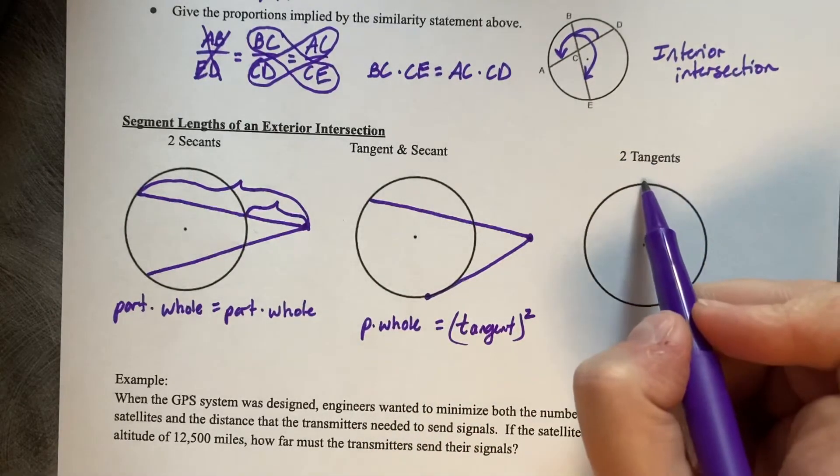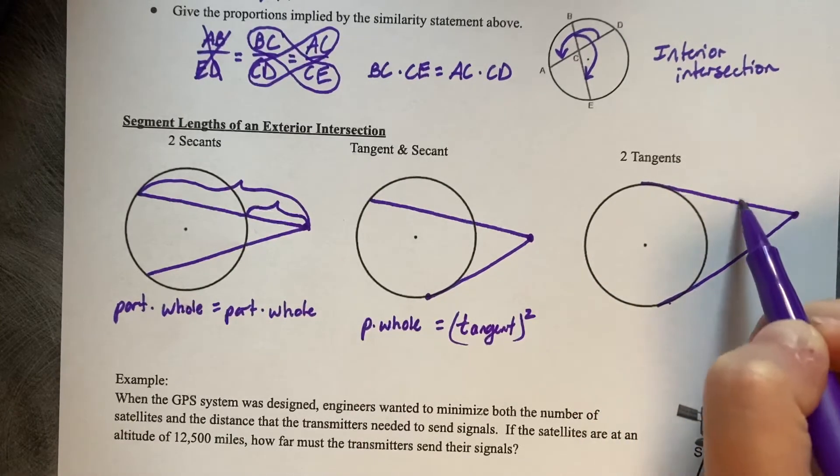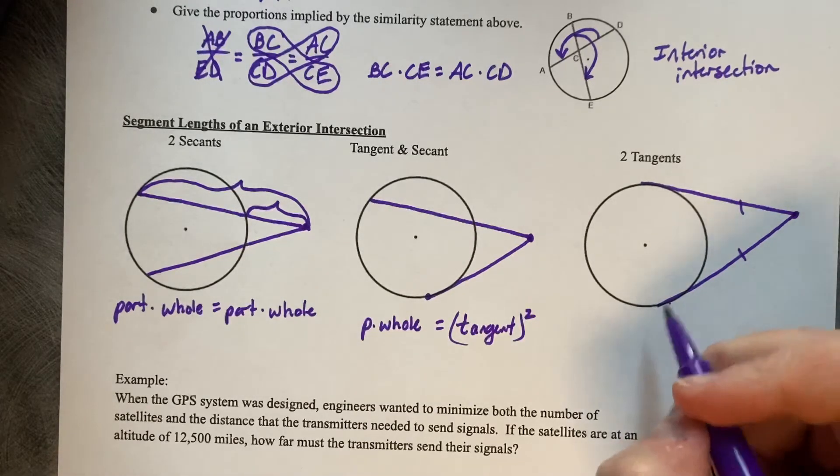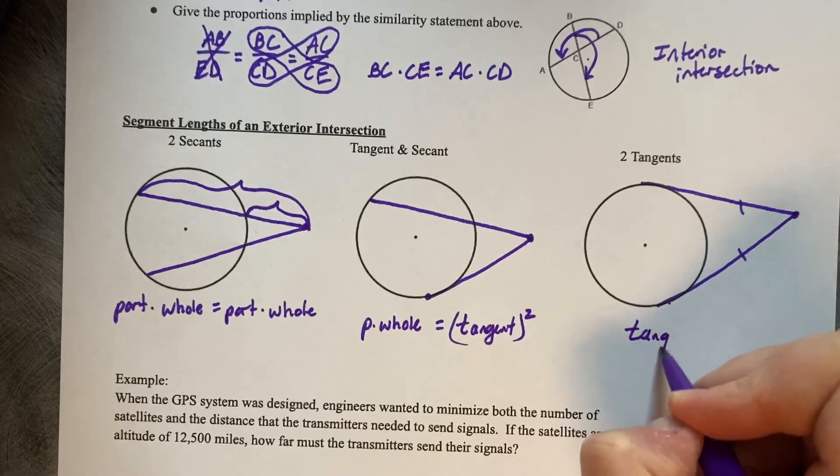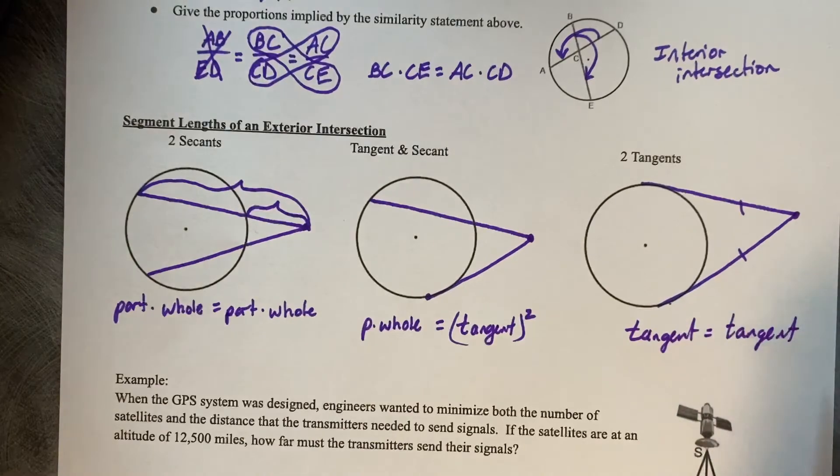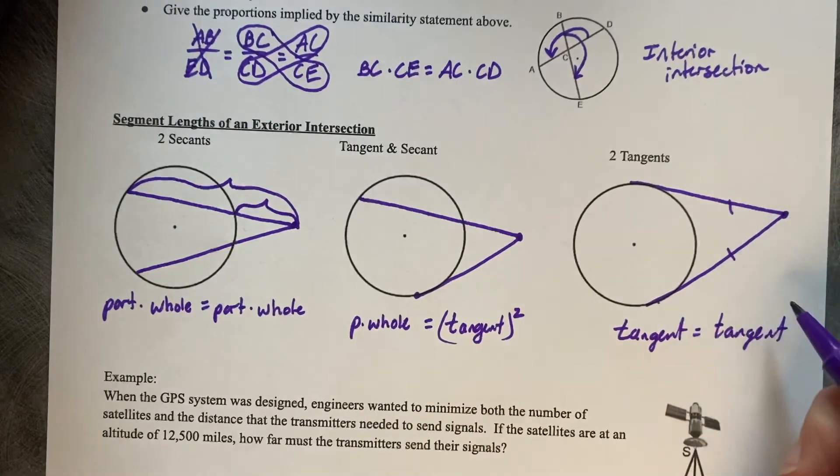Then two tangents. So those two are equal. And it's just going to be a tangent equals a tangent. Of course, you could do tangent squared equals tangent squared, but that's just more work. We know that those are the same length and we're talking segment lengths today.